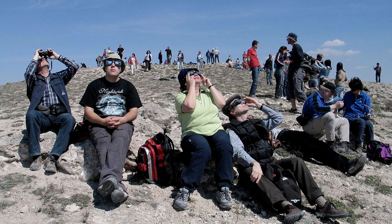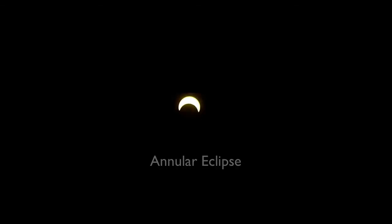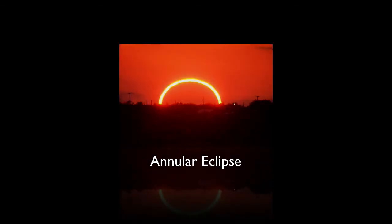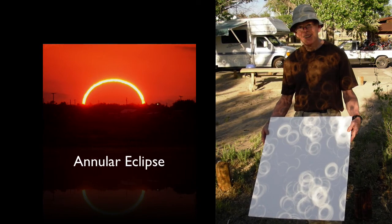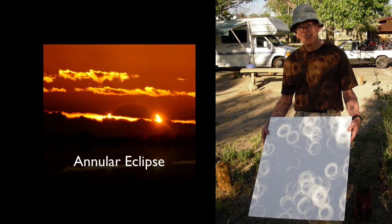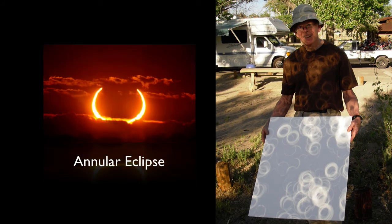Sometimes the moon is a little farther away such that it appears smaller and does not completely obscure the sun, even with perfect alignment. This is called an annular eclipse. An annular eclipse at sunset or sunrise can show the sun as an arch. The pinhole images of an annular eclipse, as shown here, show up as a bunch of circles. Like a partial eclipse, however, annular eclipses should never be looked at directly.